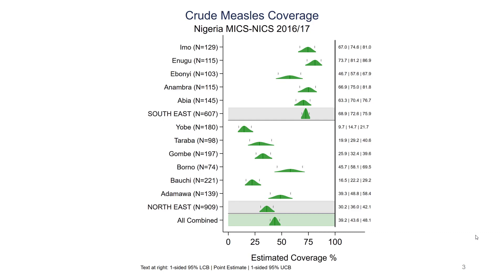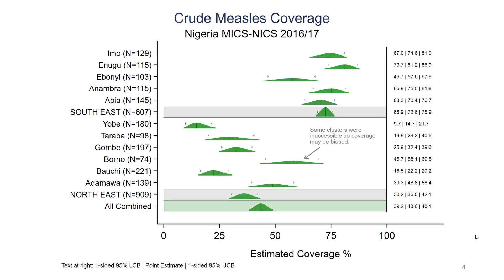This figure is tall. It looks okay tall, but we're also going to make a wide version of this figure — the same data. We've changed the aspect ratio, and as you can see we've added a text note and an arrow in the middle of the plot, pointing out that in Borno some of the clusters were inaccessible, so coverage may be biased. We'll provide you also with the demo files to make this figure.